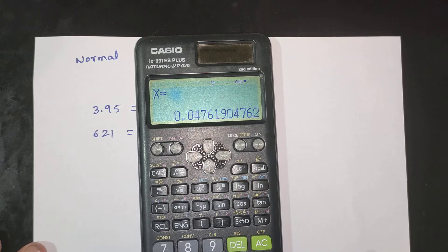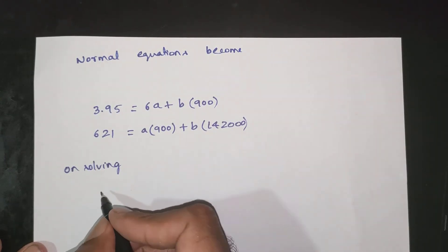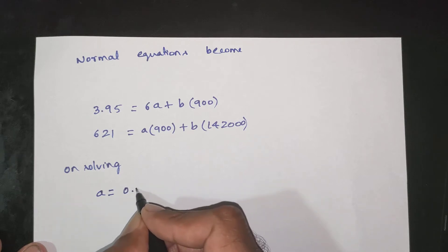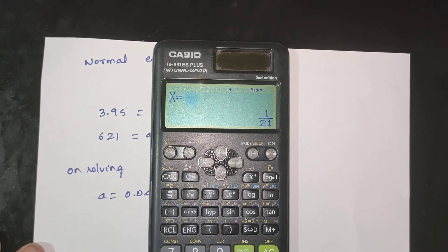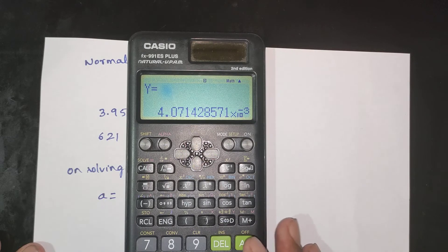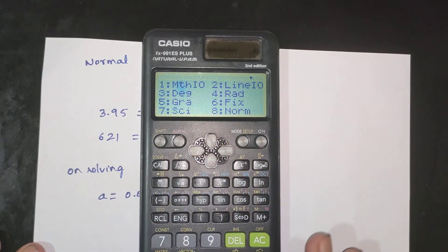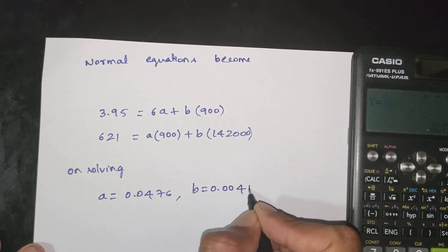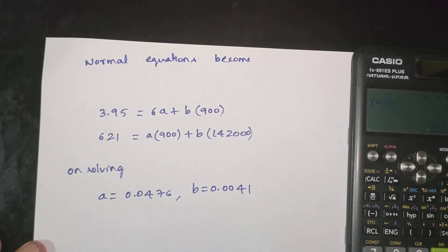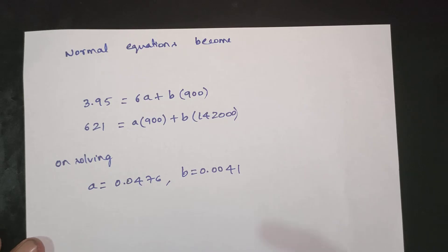Solving the simultaneous equations, we get B equal to 0.0041 and A equal to 0.0476. These are fixed to 4 decimal places. The values are confirmed correct.